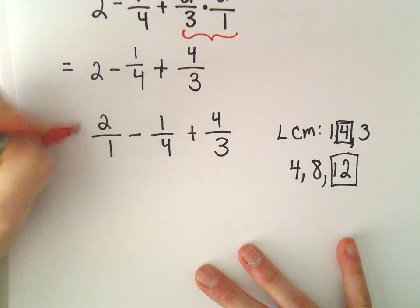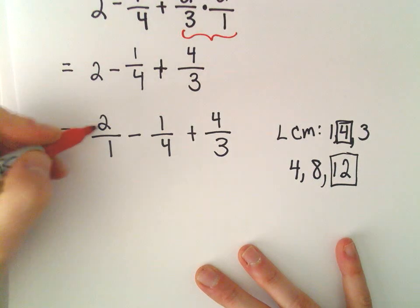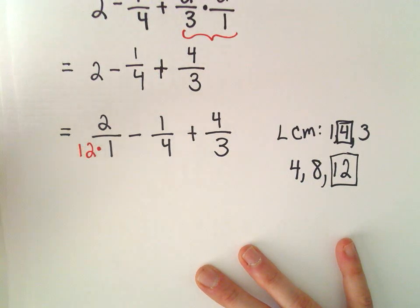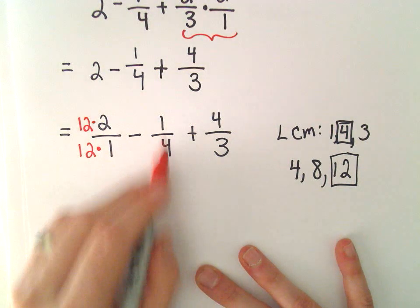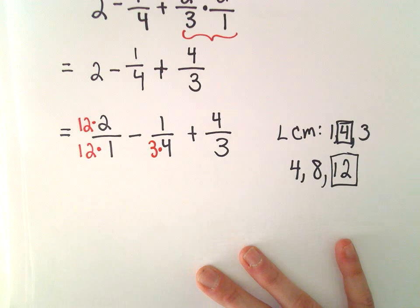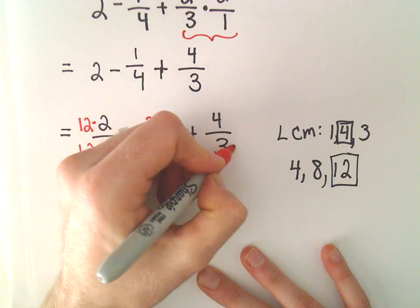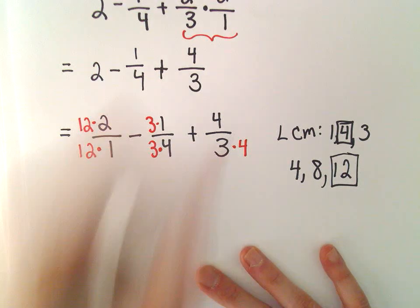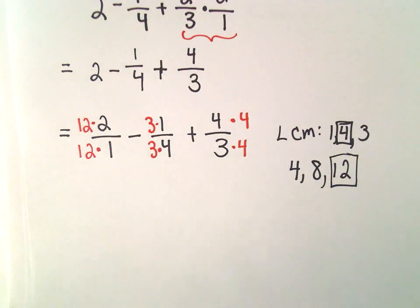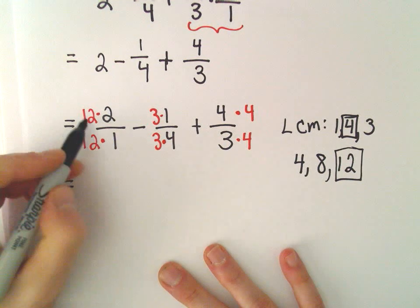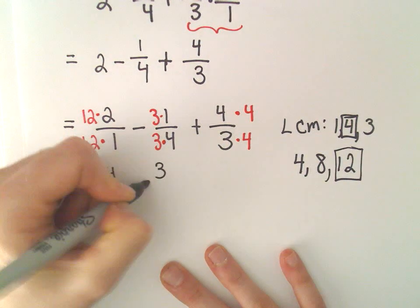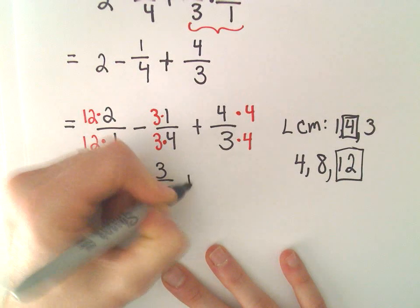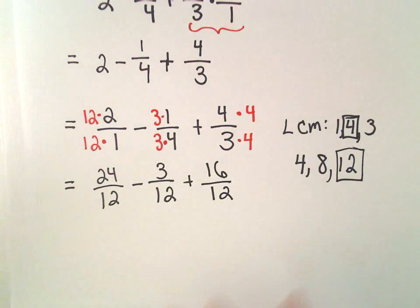To do that: for my first term, 2 over 1, I multiply the denominator by 12, which means I also multiply the numerator by 12. For my next fraction, 1 fourth, I multiply the denominator by 3, and so also the numerator. And for 4 thirds, I multiply the denominator by 4 to get the common denominator of 12. So we get 24 over 12, minus 3 over 12, plus 16 over 12.